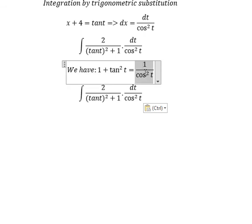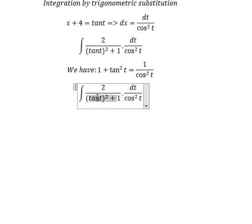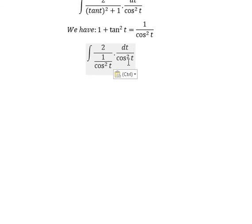So we change for this. cos²(t) multiplied with 1 over cos²(t), they will cancel together.